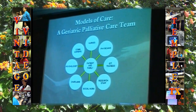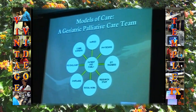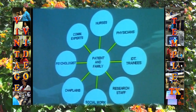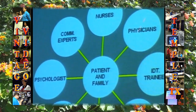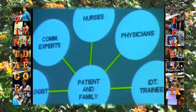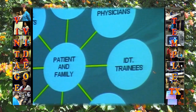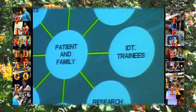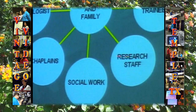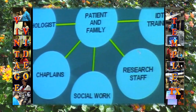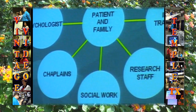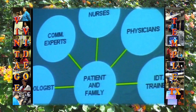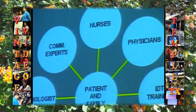This is what our palliative care team looks like — patient and family in the middle as the most important focus. We have nurses, physicians, interdisciplinary trainees, research staff, social work, chaplains, psychologists, and communication experts helping us improve communication and conduct research. If you have nursing students or other trainees, they are a very important part of the team — we must accept and embrace them.